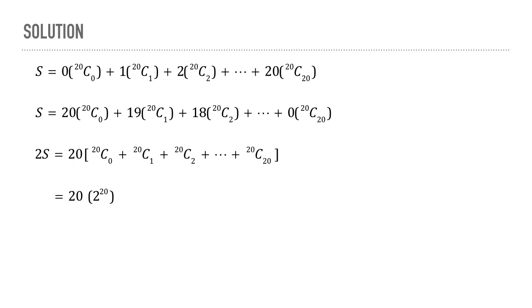Over here, we have used the fact that the sum of the binomial coefficients is equal to 2 to the power n. Here, n is equal to 20. So dividing both sides by 2, we find that the sum is equal to 20 into 2 to the power 19.